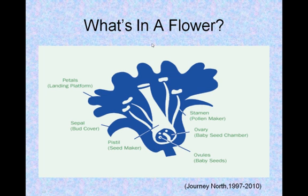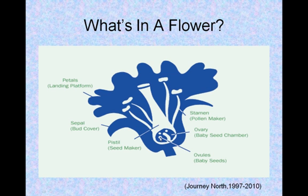What's in a flower? Here's our diagram of the flower. Here we have the petals — the landing platform. The sepal is the bud cover. The pistil is the seed maker. The stamen is the pollen maker. The ovary is the baby seed chamber. And then we have the ovules — the actual baby seed.